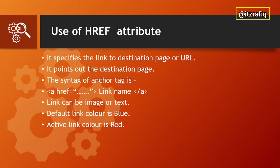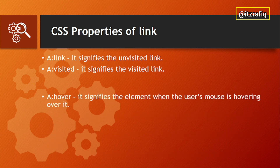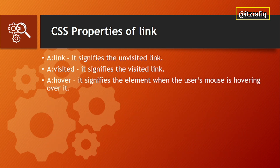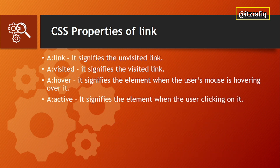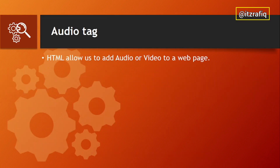The default link color is blue. When we click a link, the color becomes red at that moment. If we have already visited a link, it changes to purple. These are CSS properties to change link appearance: 'a:link' changes the unvisited link color, 'a:visited' changes the visited color, 'a:hover' changes the hovering effect, and 'a:active' changes the active link color. We can even create a link styled as a button using CSS.